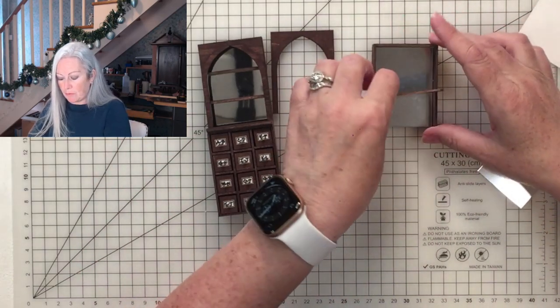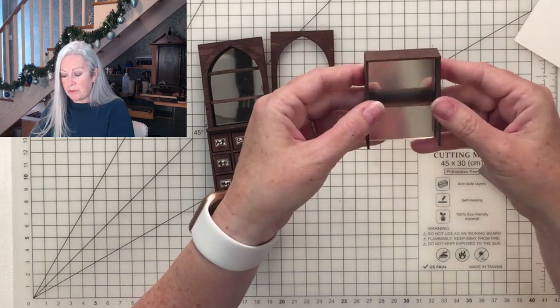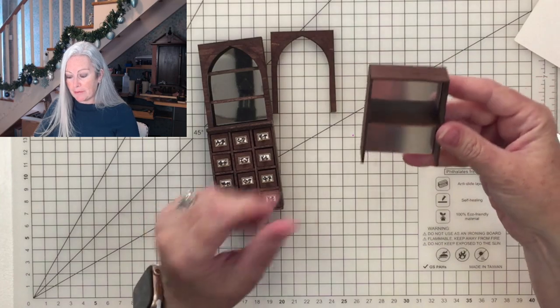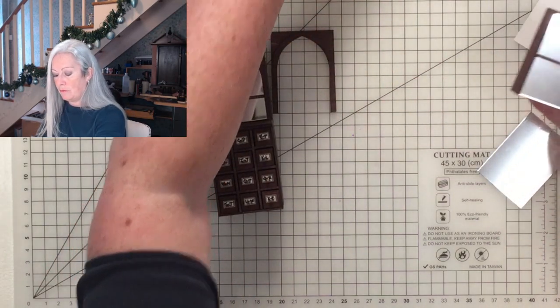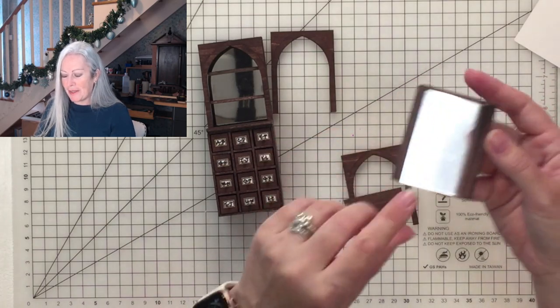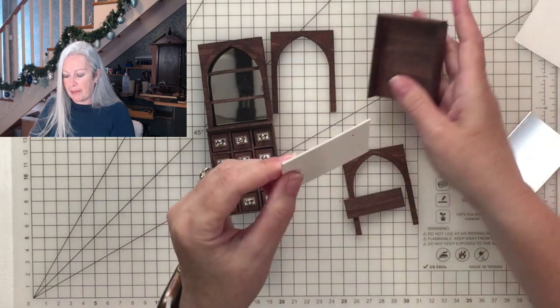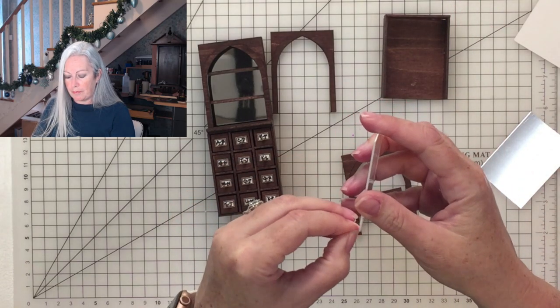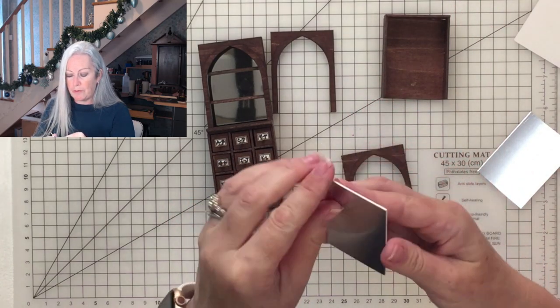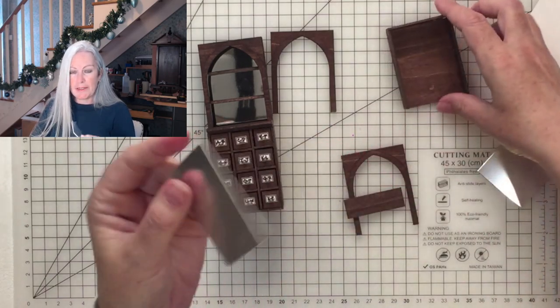I'm using one shelf on this end because I've got some taller bottles that I want to put in. So I will glue that shelf in like that. What you need to remember to do is once you've glued the mirror in, leave a little edge up so that you can remove the protective cover.